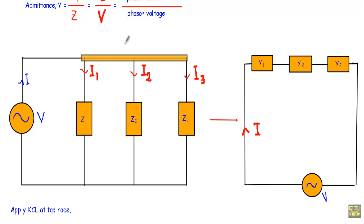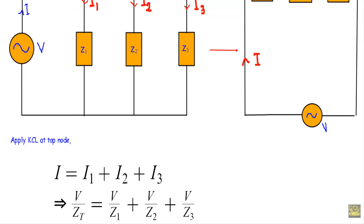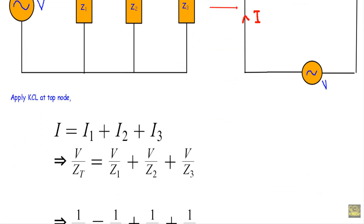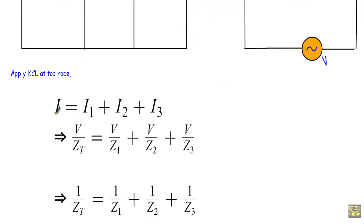At the node, the total current I is incoming and I1, I2, and I3 are outgoing. Applying KCL at this node, the sum of incoming currents equals the sum of outgoing currents, giving us I equals I1 plus I2 plus I3.